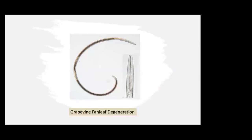Grapevine fanleaf degeneration virus is vectored by a nematode called Xiphinema index, also referred to as the California dagger nematode. The nematode is worm-like in shape and very, very small — visible only under magnification. It causes direct damage to grapevine root tips when feeding but is also able to acquire and transmit the grapevine fanleaf virus, which is why it causes such a significant problem.